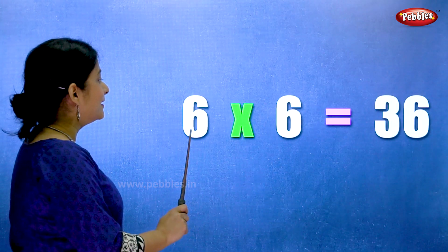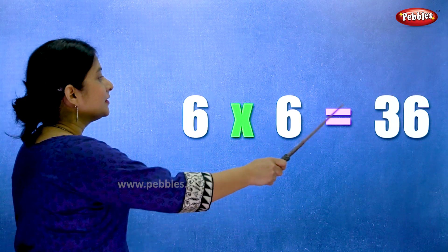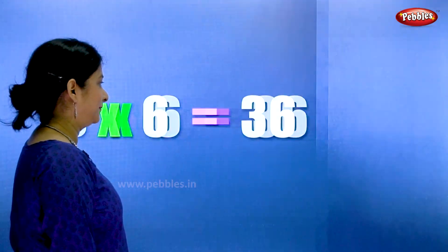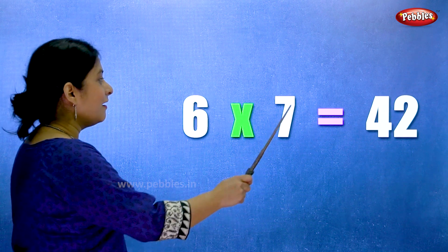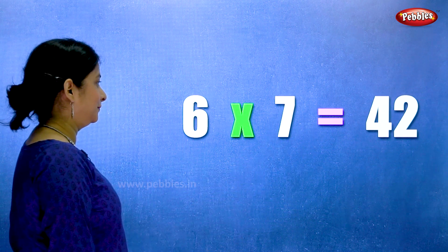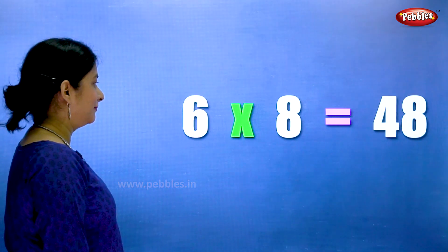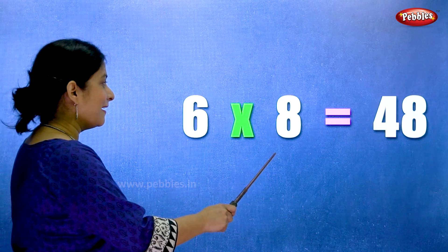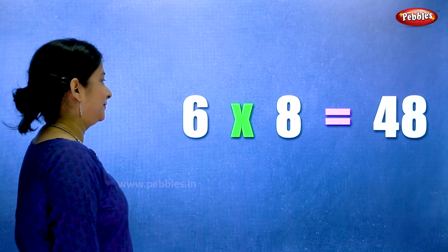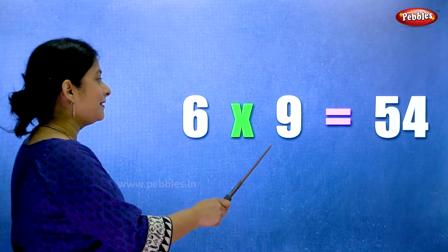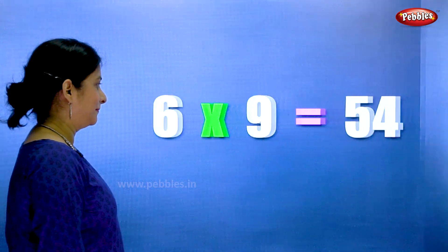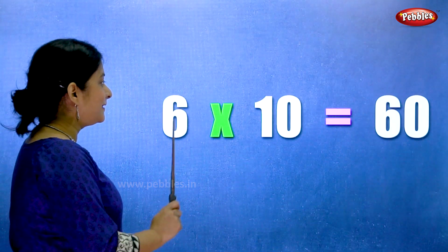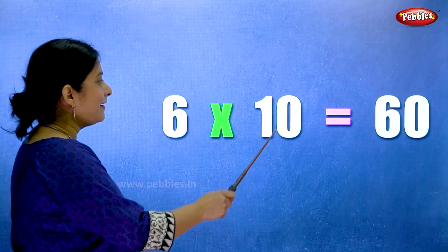Six sixes are thirty-six. Six sevens are forty-two. Six eights are forty-eight. Six nines are fifty-four. Six tens are sixty.